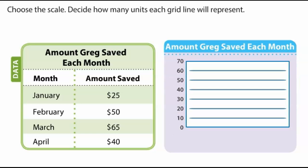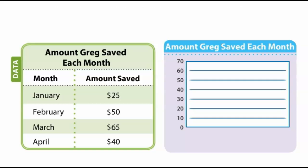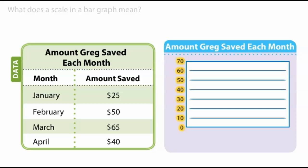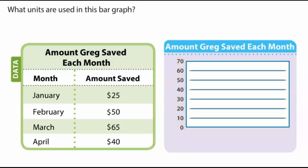Choose the scale. Decide how many units each grid line will represent. What does a scale in a bar graph mean? A scale shows the units used in the bar graph. What units are used in this bar graph? Each grid line represents $10.